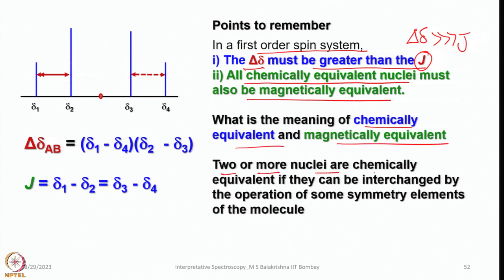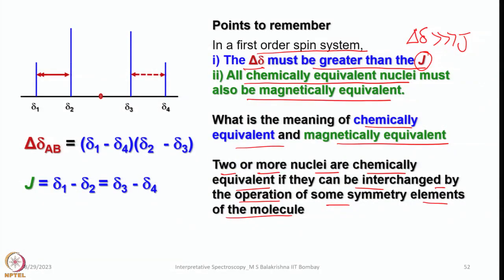Two or more nuclei are chemically equivalent if they can be interchanged by the operation of some symmetry element of the molecule. For example, in phenol, the ortho hydrogen atoms can be interchanged by a C₂ rotation with respect to the OH axis. If we cannot distinguish them, then we can say both are chemically equivalent. In an AB system, delta-AB equals the square root of (δ₁ − δ₄)(δ₂ − δ₃), and J is calculated as δ₁ − δ₂, which equals δ₃ − δ₄.